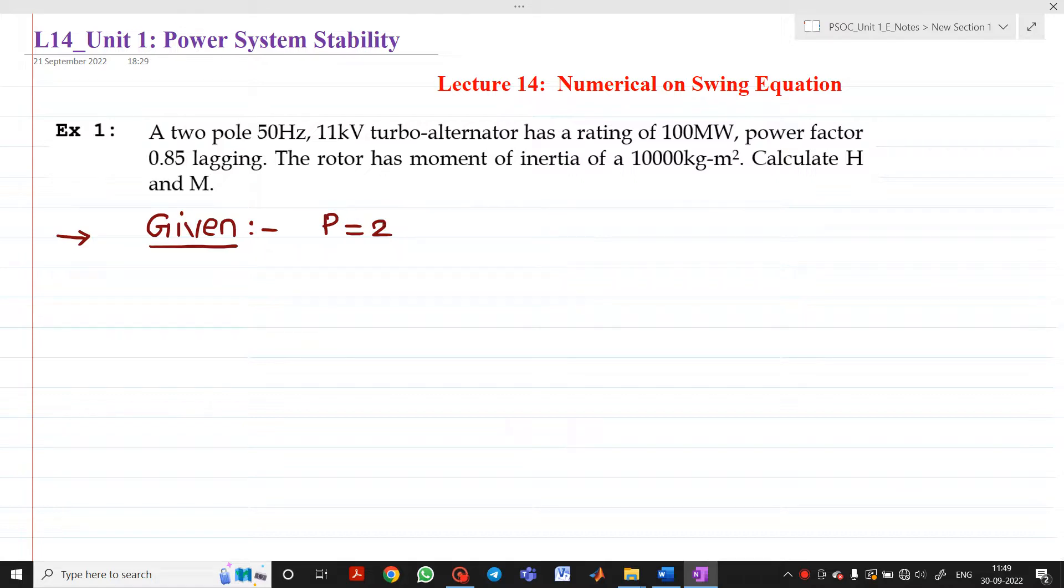The power factor is 0.85 lagging, so cos phi equals 0.85 lagging. The rotor has a moment of inertia 10,000 kilogram meter square, so J equals 10,000 kg m².